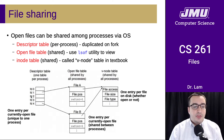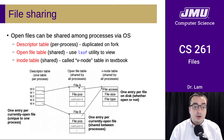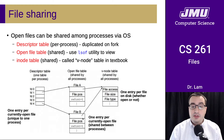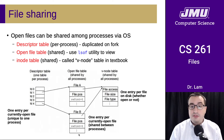So there's one entry per currently open file, and this is unique to one process. The next kind of table is the open file table, which is another thing that the operating system maintains. This is shared — there's one open file table that's kept for all processes.